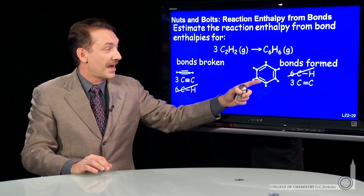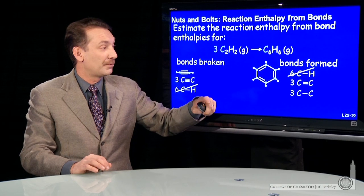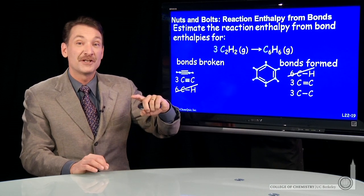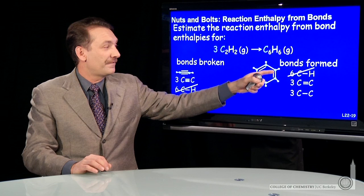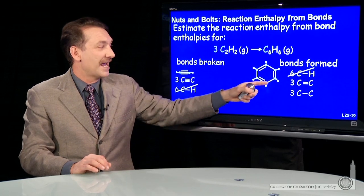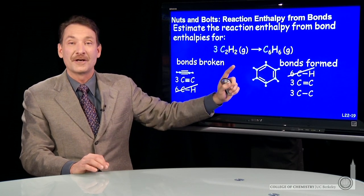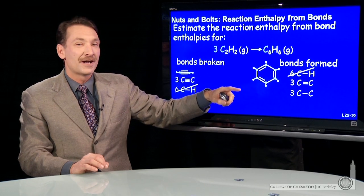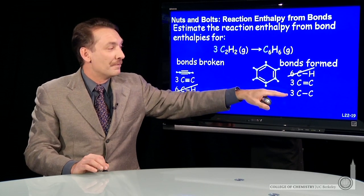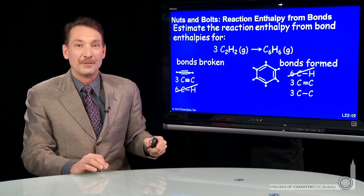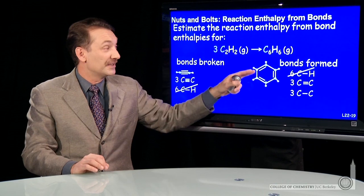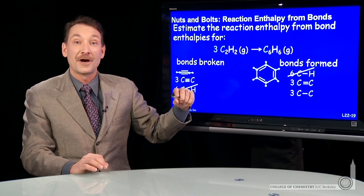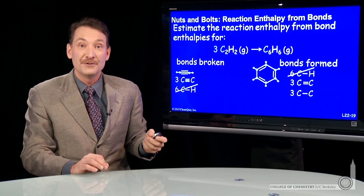In this case, benzene has alternating double and single bonds. Depending on which table you look at, you might find a delocalized carbon-carbon bond value, though that's not very common. I use the double and single bond values, but if your table has a delocalized carbon-carbon bond, since benzene is delocalized, you could use that instead.